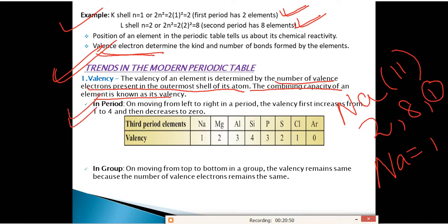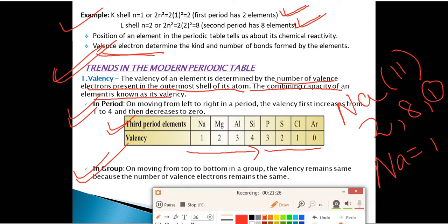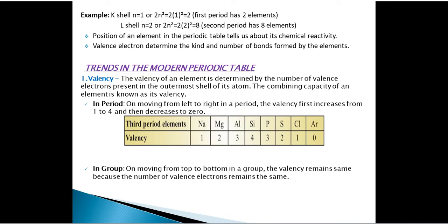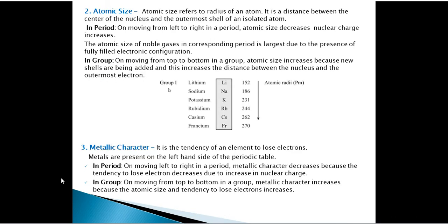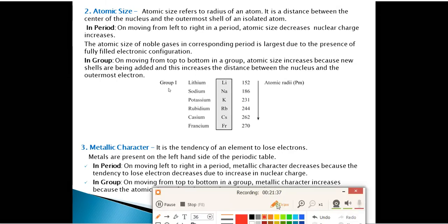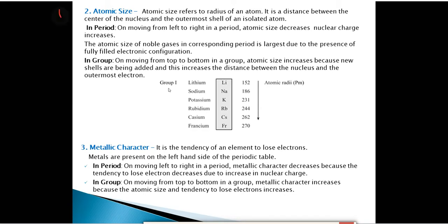Trend of valence in a period: on moving from left to right in a period, valence first increases from 1 to 4, then decreases to 0 (taking the third period as example). Trend in a group: on moving from top to bottom, valence remains the same because the number of valence electrons stays the same. For example, all elements in Group 1 have a valence of 1.